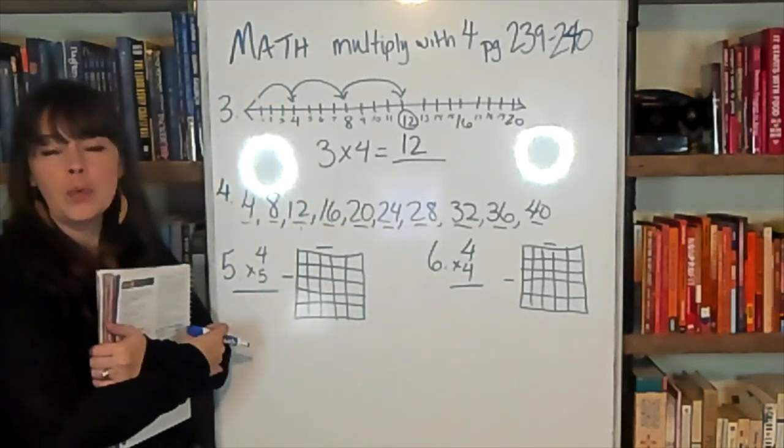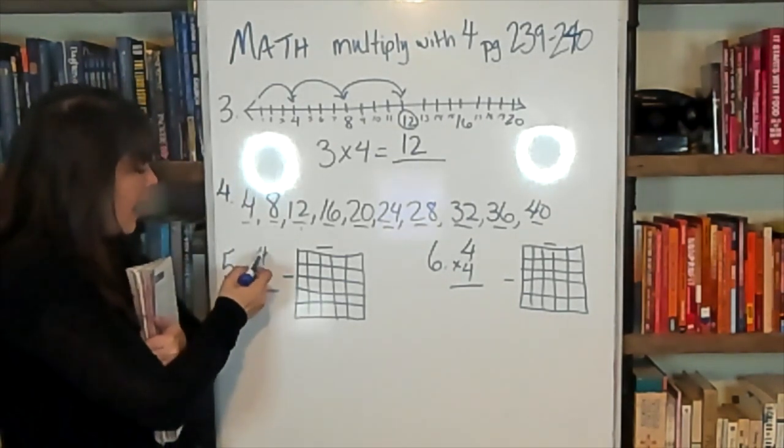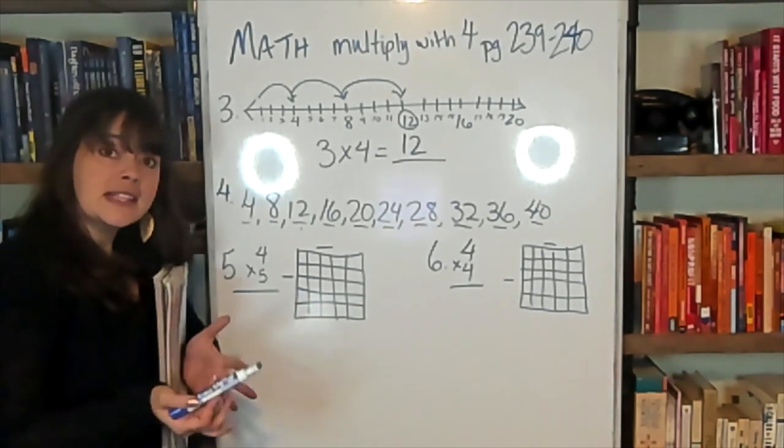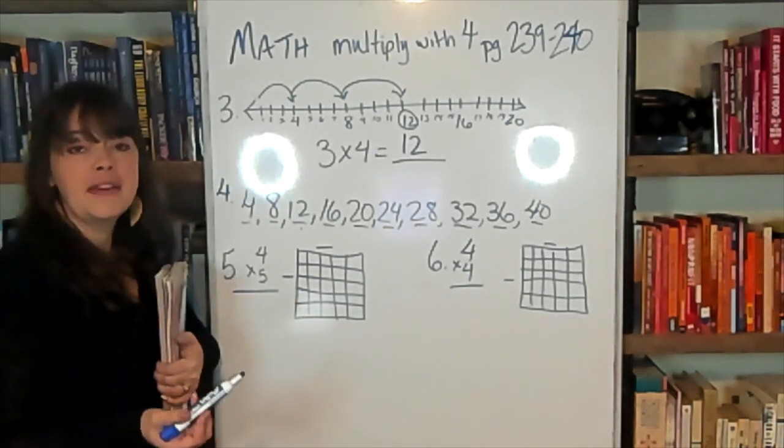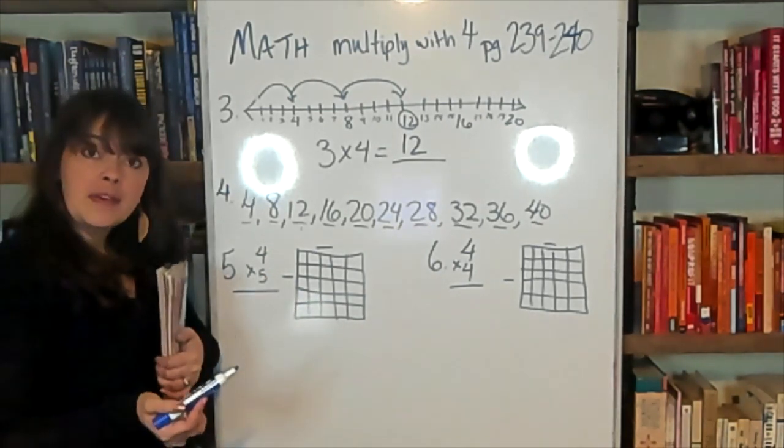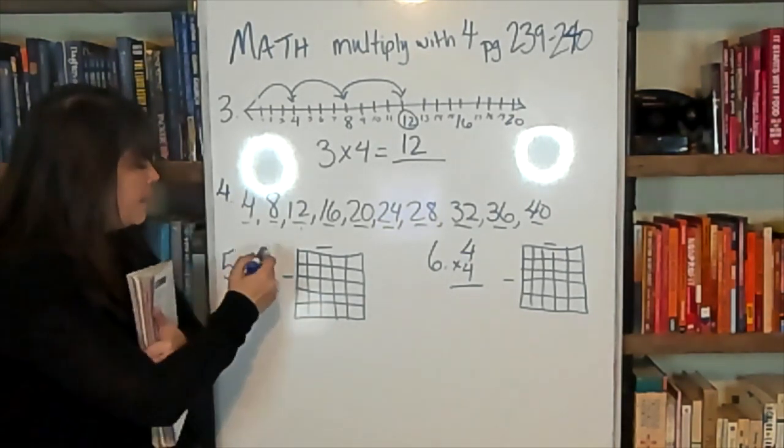Then we're going to do work making an array, which is something we've practiced at various times. We have the math problem 4 times 5. It's asking us, what is the answer? 4 times 5. Now, we can remember what we know about 5's. Anything that's multiplied with a 5 either ends in a 5 or a 0.